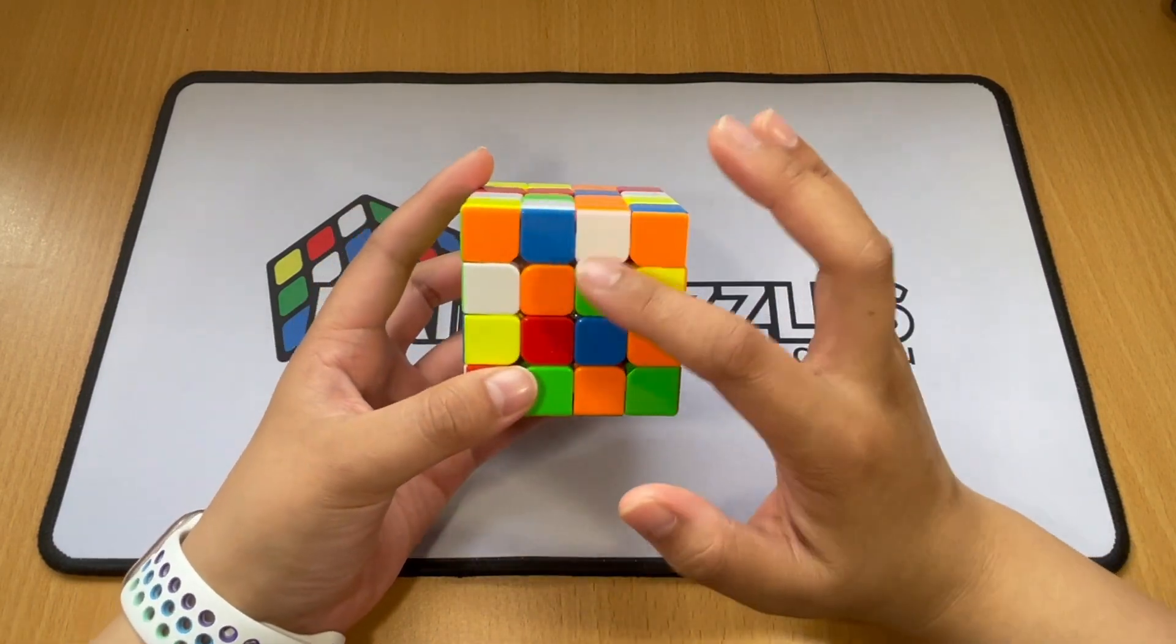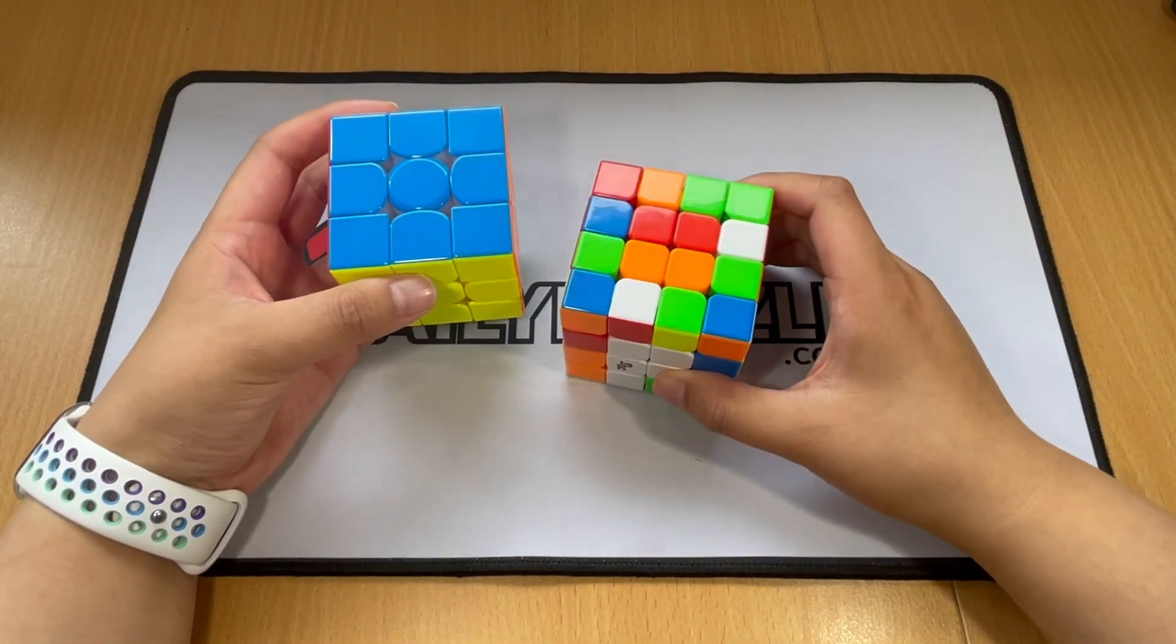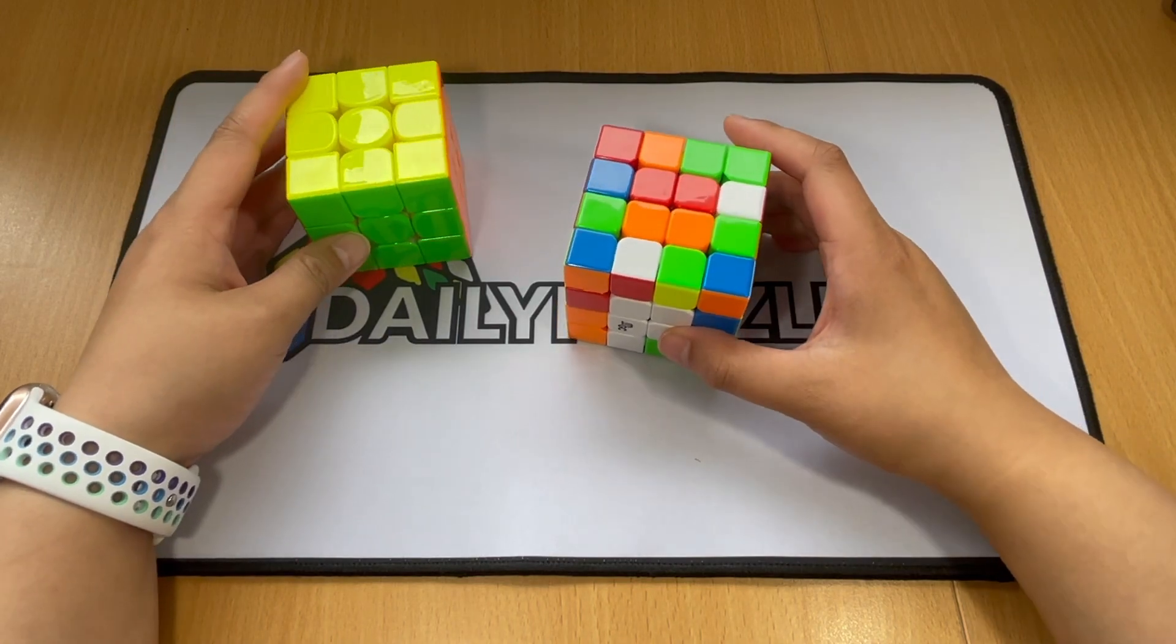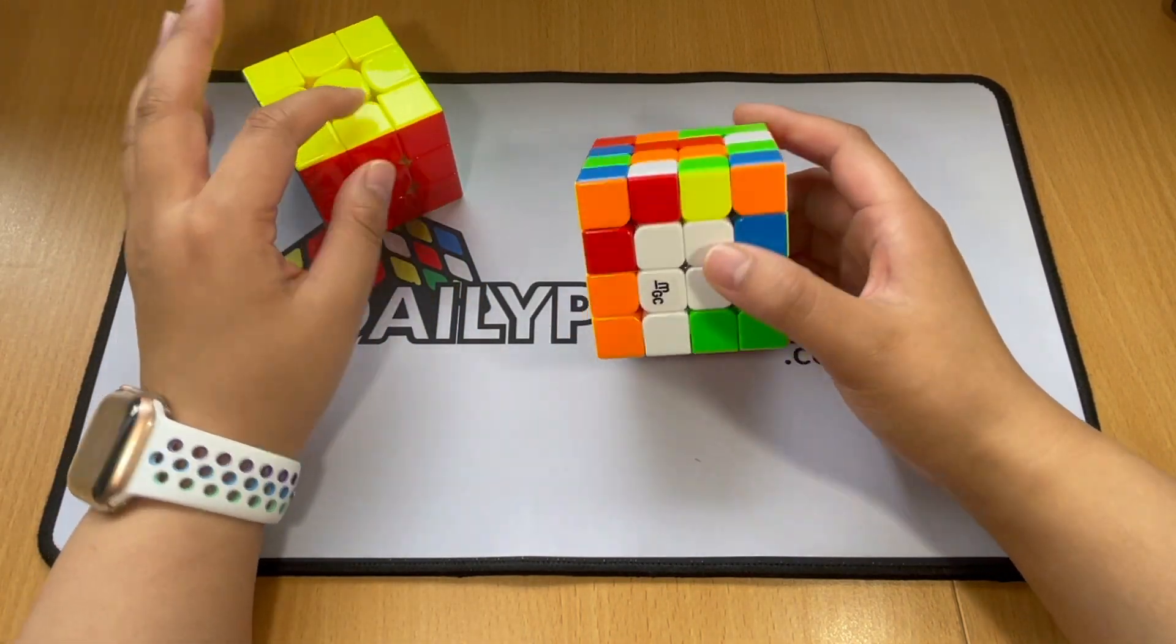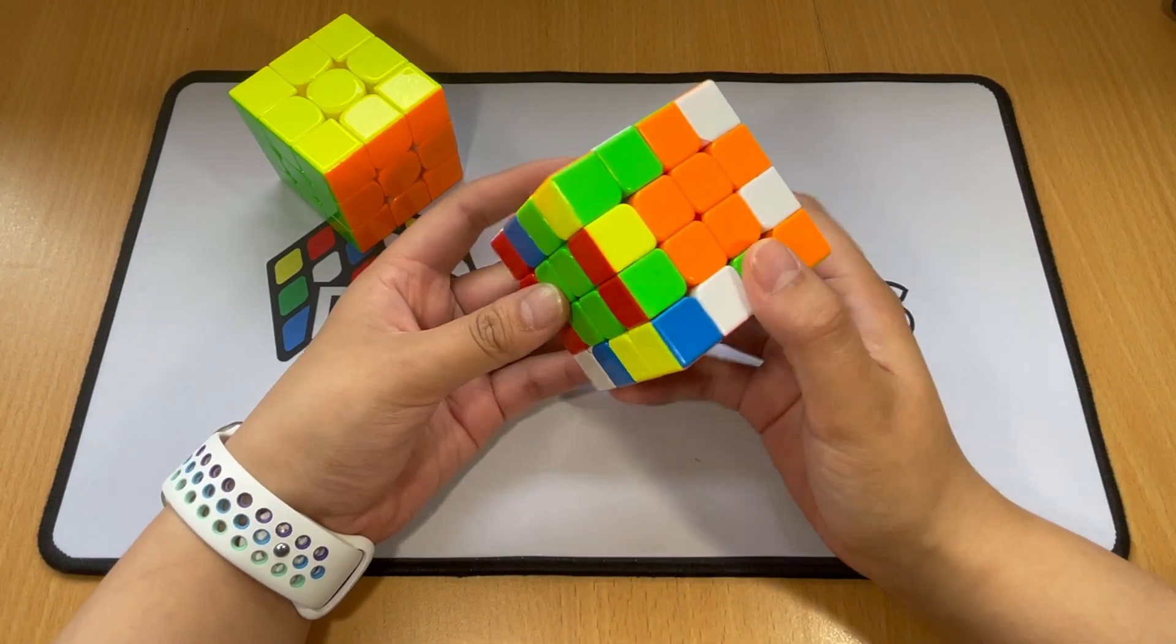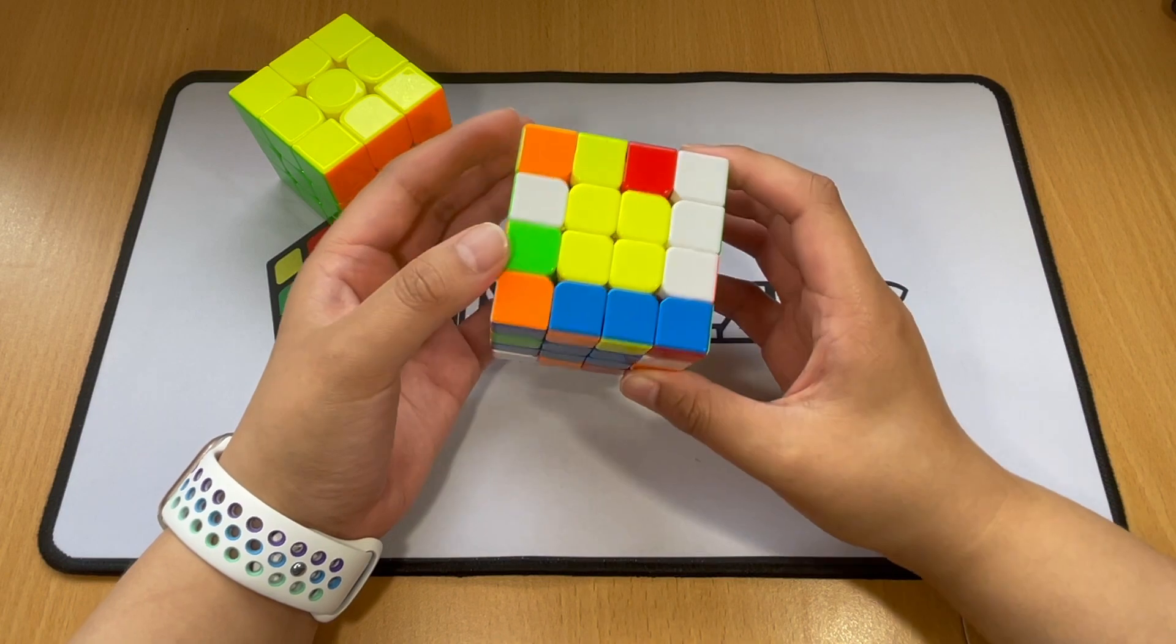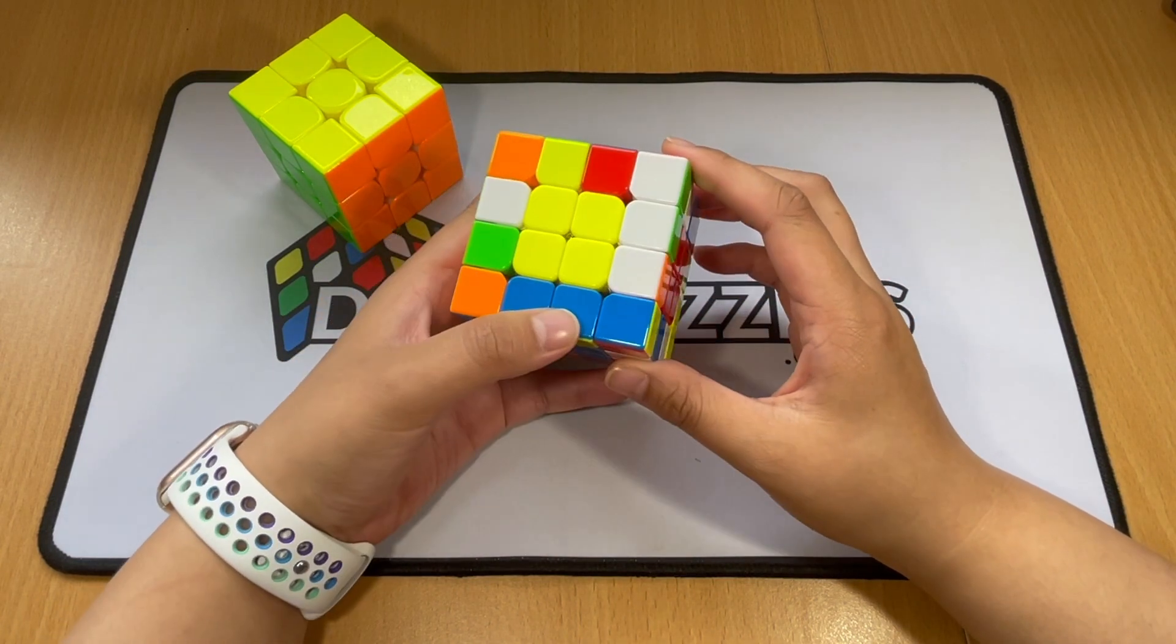The next step is to find bars of color. There, I got my last bar. Now we're going to make sure all of these line up in the correct arrangement. I'm going to do white on the bottom, so I need green next to orange, next to blue, next to red. You can see they now line up. From here, we need to do edge pairing. There's an algorithm you can learn online which pairs these up.